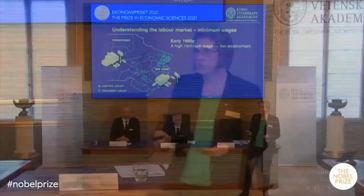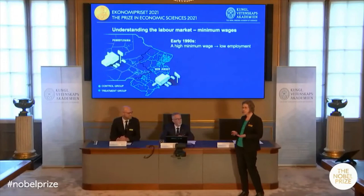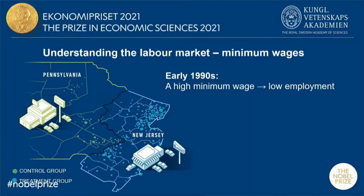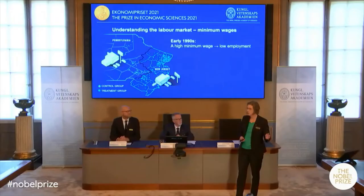They focused on fast food restaurants, a sector where wages are low and where a high minimum wage is likely to make a difference. They noted that in the U.S. state of New Jersey, the minimum wage was increased by 80 cents per hour in 1992. Just comparing what happened with employment as a result of this is not enough to give a causal answer, because many other things could have affected employment as well.